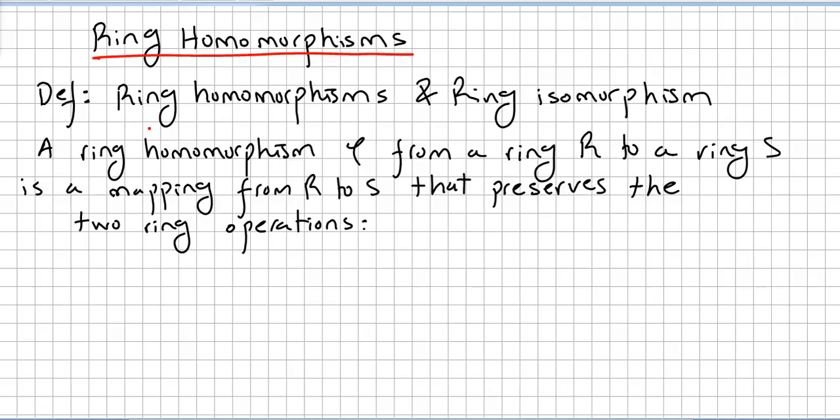We are going to see ring homomorphisms and ring isomorphisms. First, a ring homomorphism φ from a ring R to a ring S is a mapping from R to S that preserves the two ring operations.